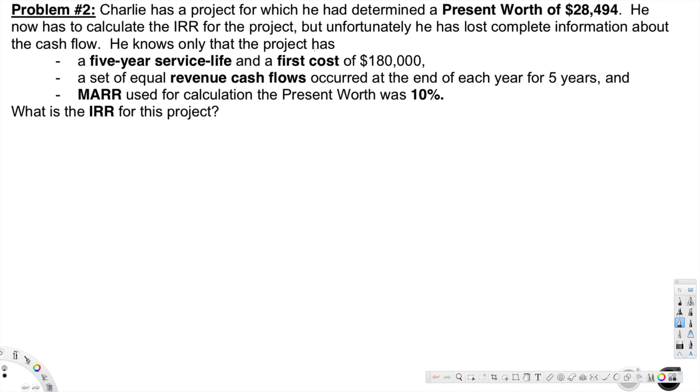He knows only that the project has a five-year service life and a first cost of $180,000. A set of equal revenue cash flows occurred at the end of each year for five years, and MARR used for calculation of the present worth was 10 percent. What is the IRR for this project?